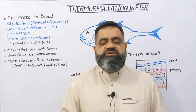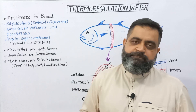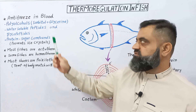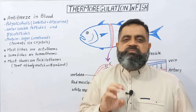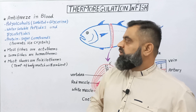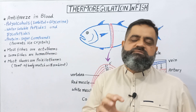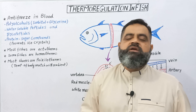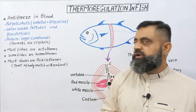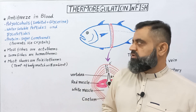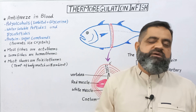For that purpose, these fishes which live in very cold water have adapted to have antifreeze compounds in their blood. Antifreeze is present in different forms. Some fishes have polyalcohols like sorbitol and glycerol in their blood, which prevents the formation of ice crystals. And some fishes also have water-soluble peptides and glycopeptides. These peptides help prevent ice crystal formation or supercooling of the blood. Some fishes also have protein-sugar compounds, which help to prevent the formation of ice crystals inside the blood plasma.